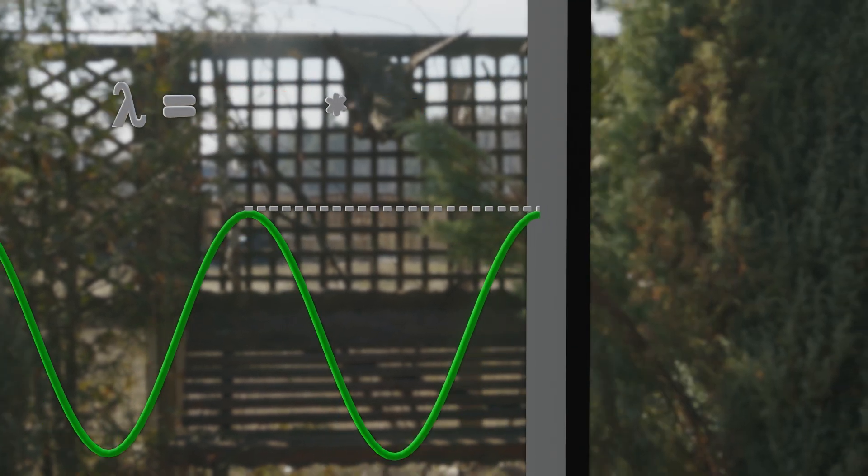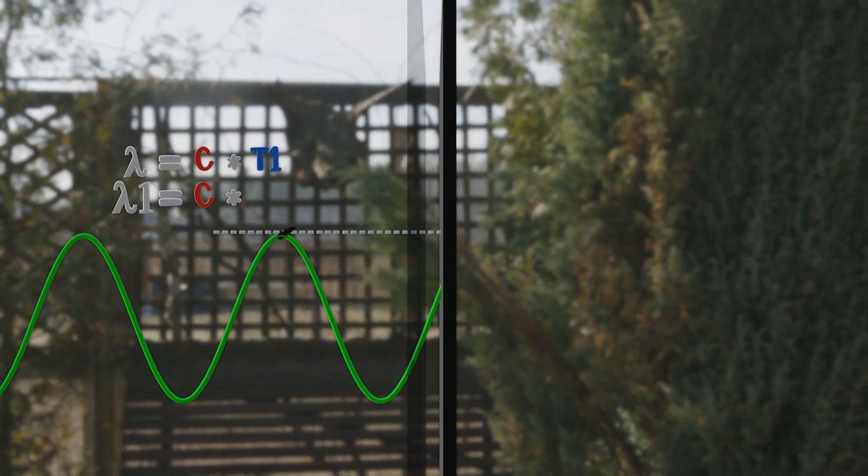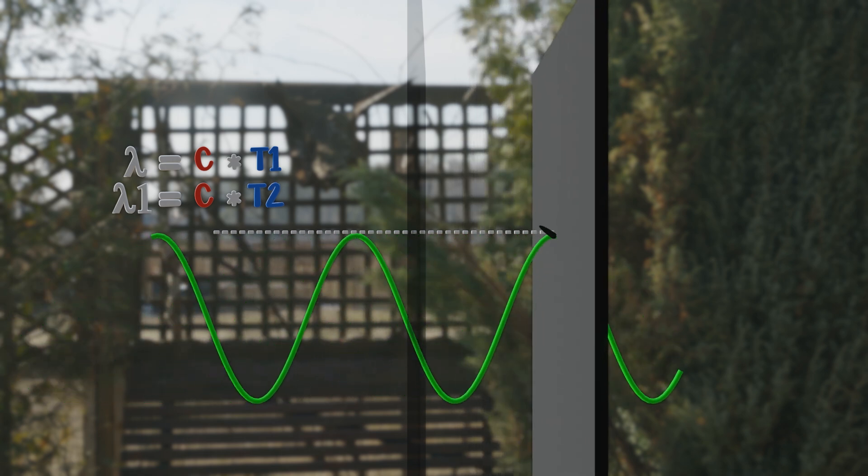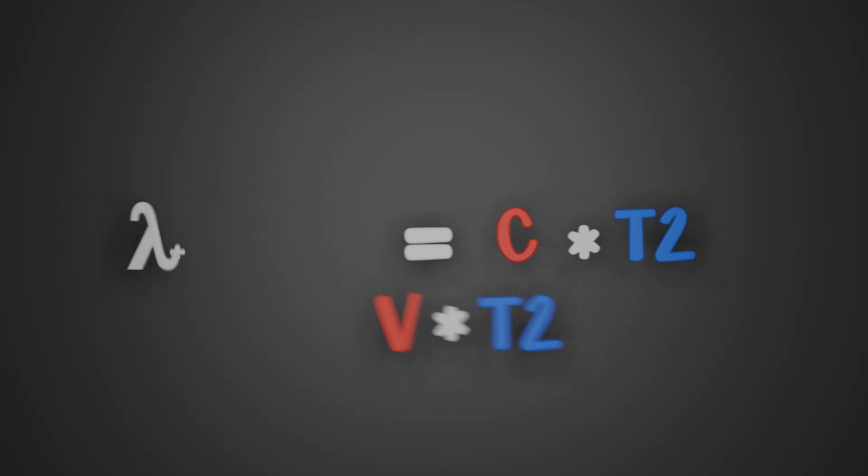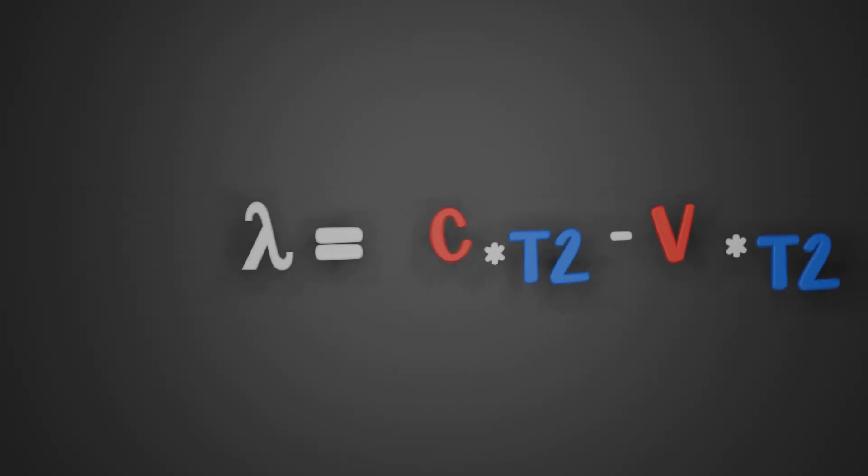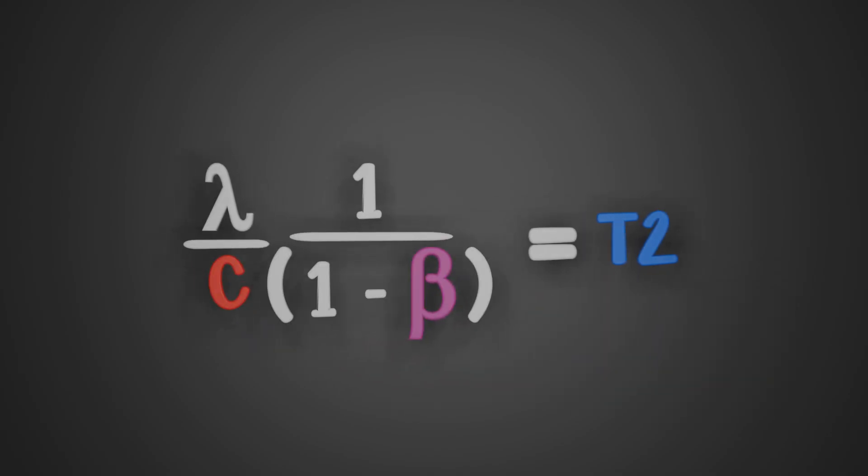If motionless, our wavelength is simply the speed of the wave times the period. However, now our wavelength is the speed of the wave times our new period, and our new wavelength is the old wavelength plus the recession speed of the wall times the new period. We have one unknown, so we can solve this equation. We just rearrange it first to isolate the new period, and in doing so we can clean it up a bit and introduce a new variable beta.